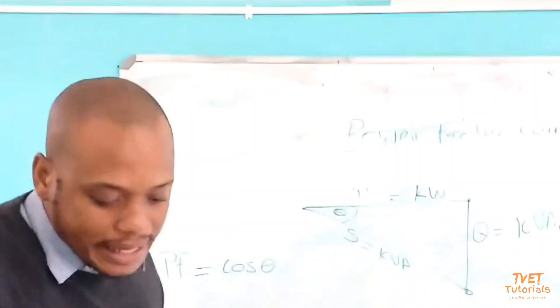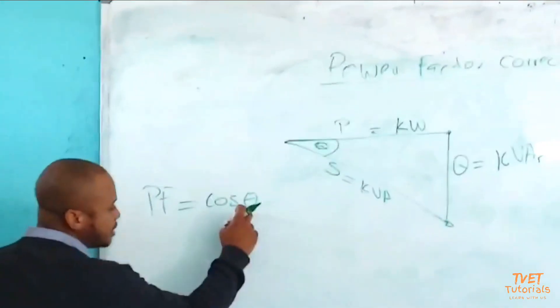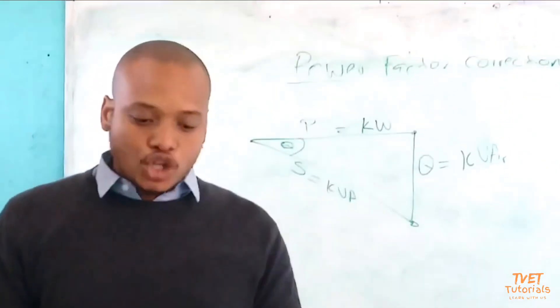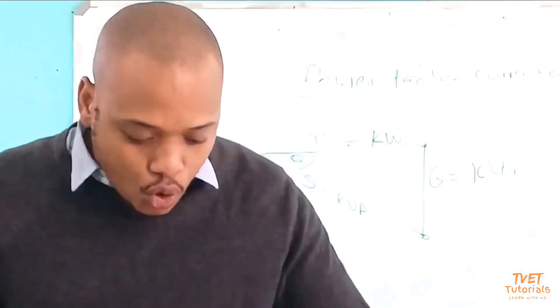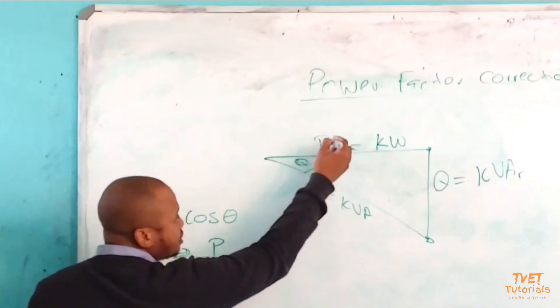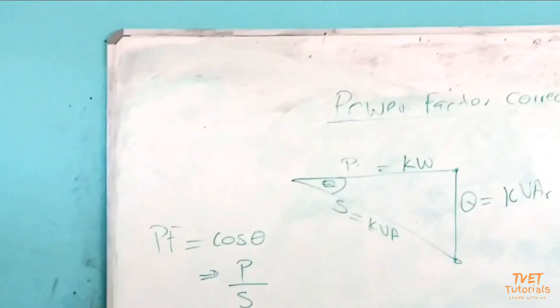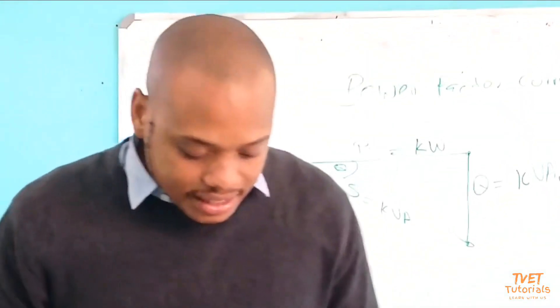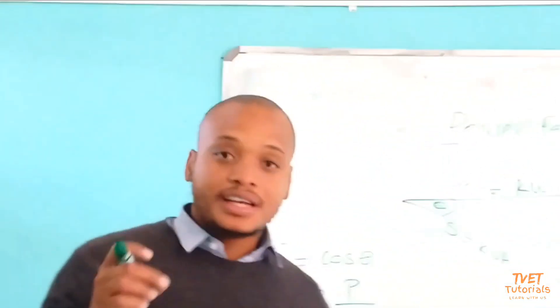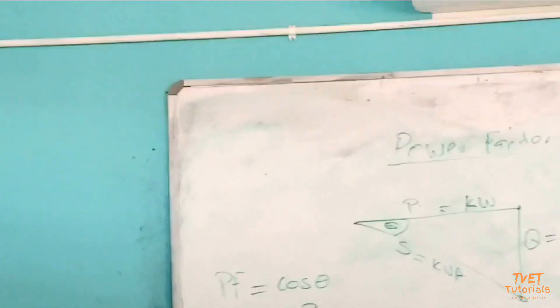By definition, power factor is the ratio: PF equals cos theta. PF is also referred to as the ratio of the true power to the apparent power. Power factor equals P, which is the true power, divided by S. Why are we so concerned about power factor and doing this power factor correction?